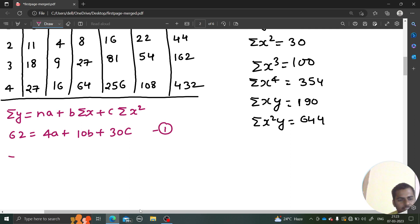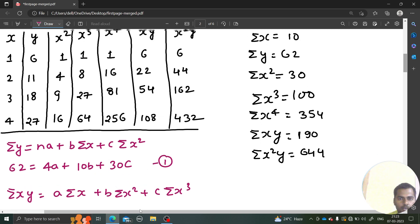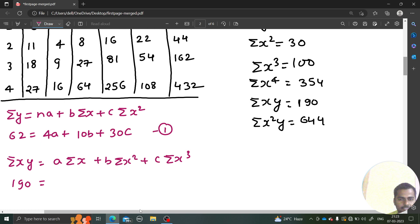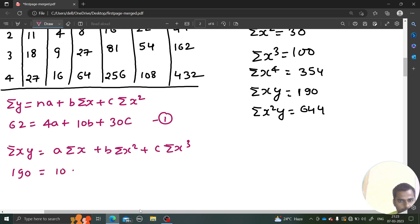Second equation was summation xy equals to - we started from power 1 then power 2 then power 3. Summation xy is 190 equals to summation x is 10, summation x square is 30, summation x cube is 100. This is equation number 2.